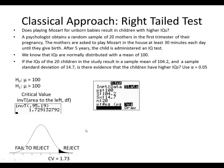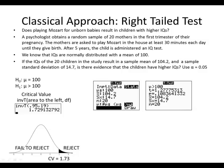With means, we use the t-test because we do not know our standard deviation and our sample size is small. Under t-test using stats, mu-sub-0 comes from our null hypothesis: 100. The sample mean from our sample of 20 is 104.2. Our standard deviation is 14.7 and our sample size is 20. We want to test whether the mean is greater than 100, and here are our results.